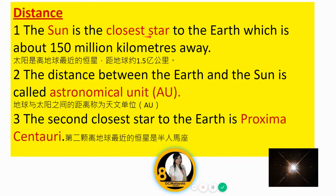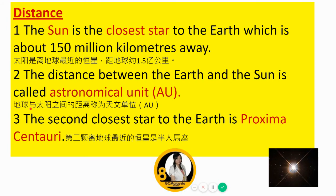The brightness of a star depends on its size, distance, and surface temperature. The sun is the closest star to the Earth, about 150 million kilometres away. The distance between the Earth and the sun is called an astronomical unit. The second closest star to the Earth is Proxima Centauri.